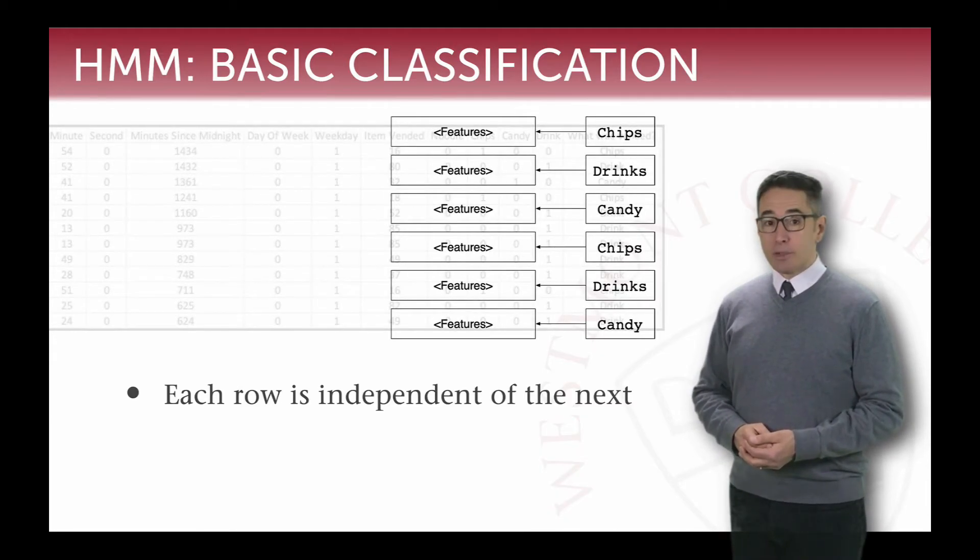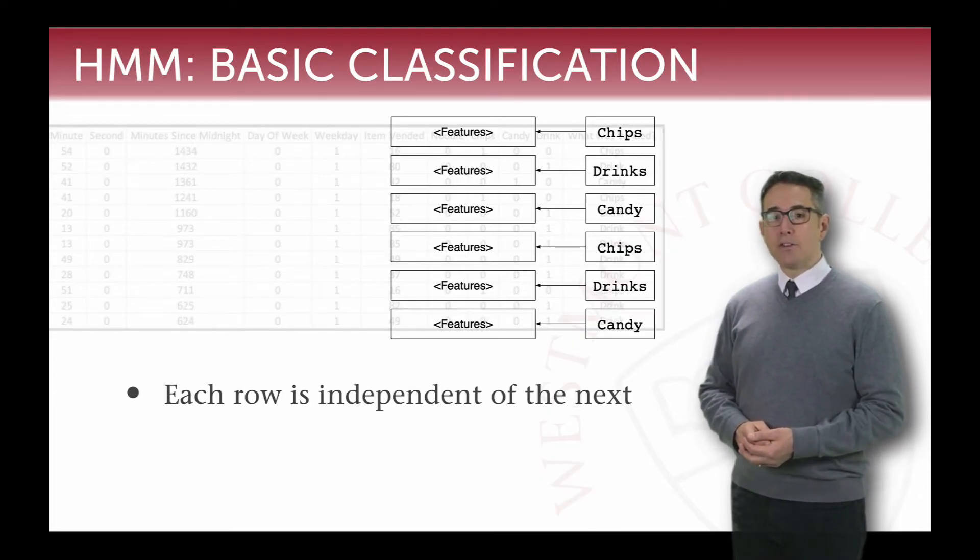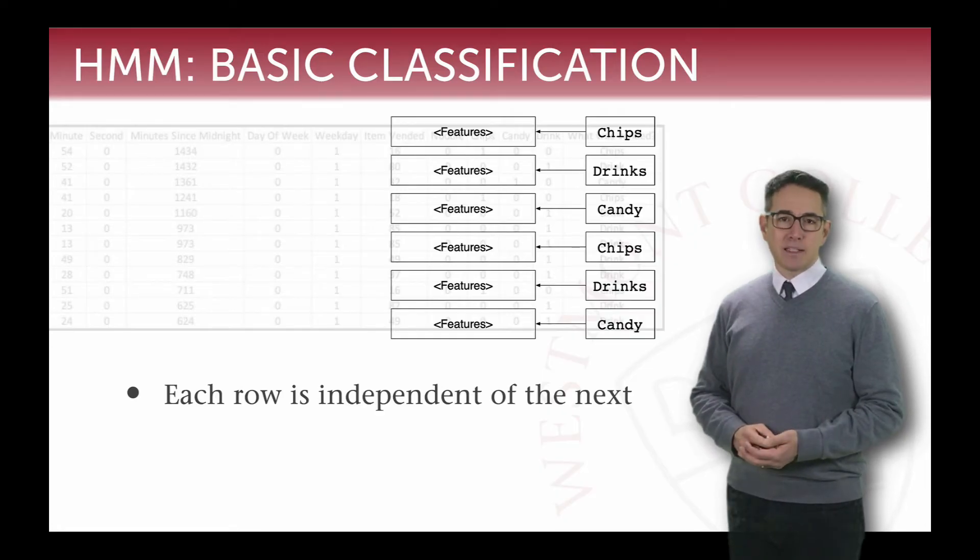So we can think of that abstractly as a set of features and then some classification, and I draw the arrow from right to left because really the way we think about it is that the causality, why we see the features that we see, is driven by the choice that the person is making. So the person makes the chips, and we assume, based on our model, that that means that it's a certain time of day or a certain day of the week.